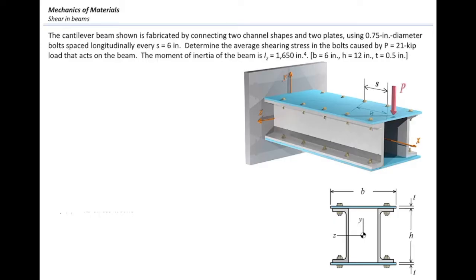For solving this problem, we need to use the design equation: the shear flow provided by the fastener should be larger than the shear flow applied by the loading. To determine that, there are a few parameters we need to find. First is the shear force. In a cantilever beam subjected to a force at its end, the shear force is constant along the length of the beam and is equal to the applied force P.